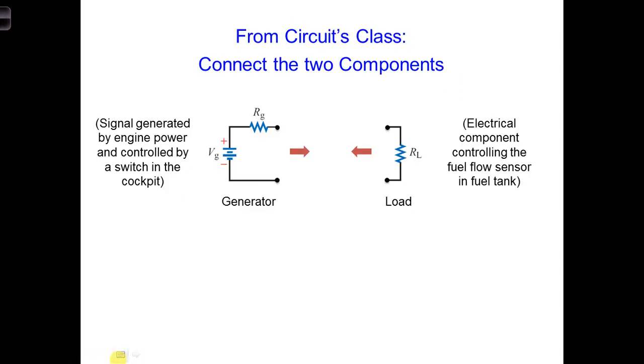Let's consider two electrical components that we want to connect in the airplane. Imagine one of these electrical components is a signal generator, shown on the left here. In our case, we'll assume a switch in the cockpit using power generated by the engine is used to generate the electrical signal. In general, the generator may have an internal resistance, as shown here with a composite value of Rg.